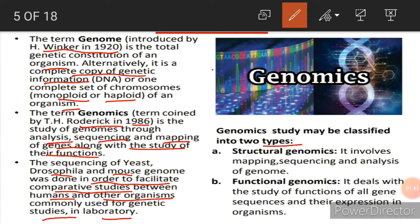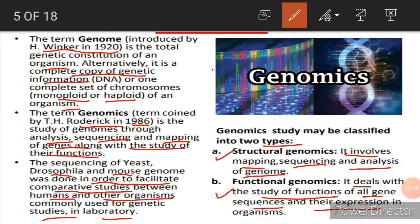Genomics may be classified into two types: structural genomics and functional genomics. Structural genomics involves the mapping, sequencing and analysis of the genome, whereas functional genomics deals with the study of the function of all gene sequences and their expression in organisms.